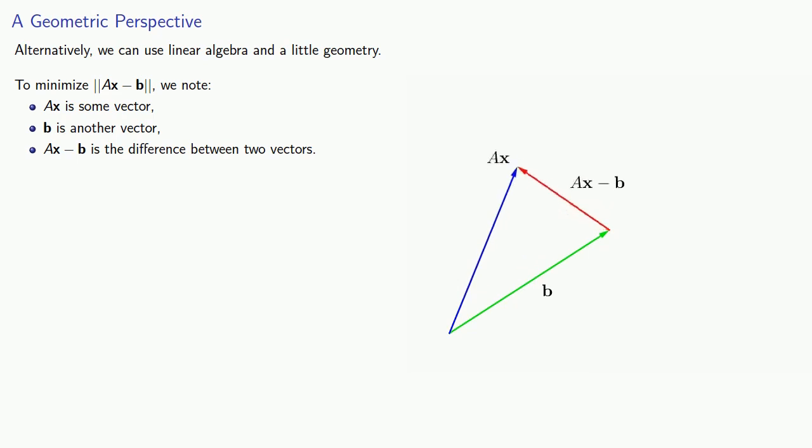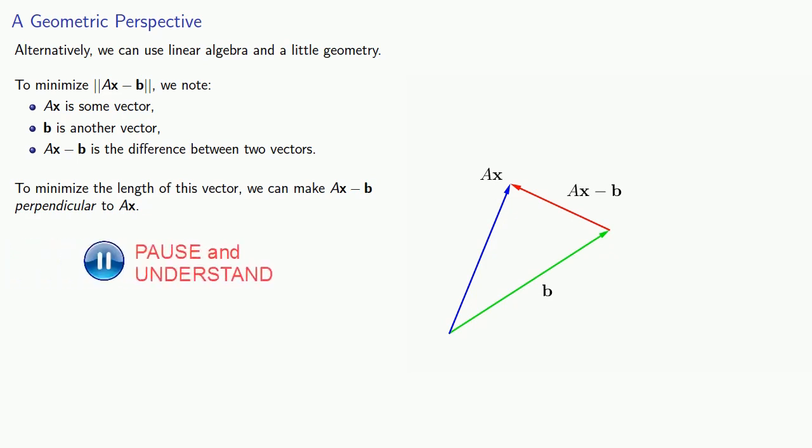So as we change x, this vector Ax and Ax minus b will change. And so to minimize the length of this vector, we can make Ax minus b perpendicular to Ax. And so from our geometric perspective, we can require Ax dot Ax minus b to be zero.